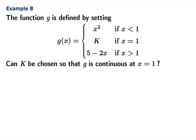Let's end with this example of a piecewise defined function with three pieces. g of x equals x squared when x is less than 1, k when x equals 1, and 5 minus 2x when x is greater than 1.